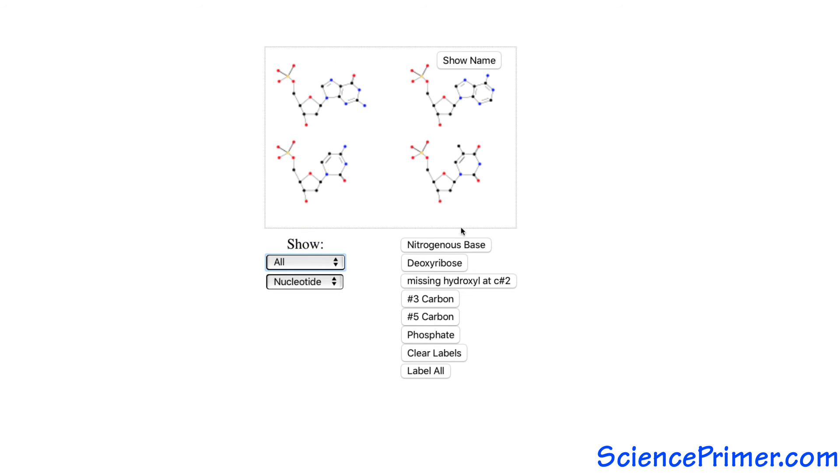Each nucleotide in DNA contains one of four different nitrogenous bases: thymine, cytosine, adenine, or guanine.